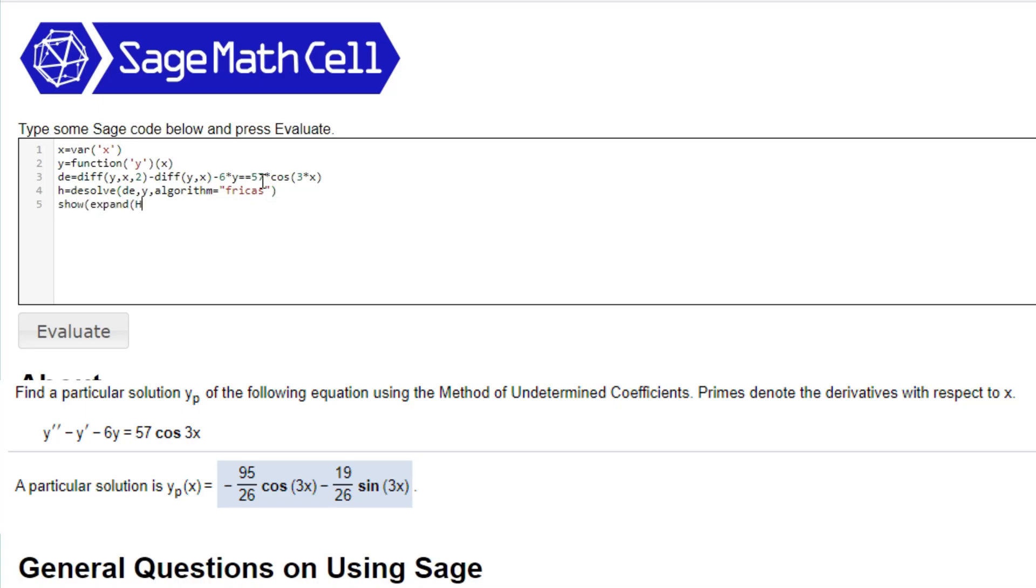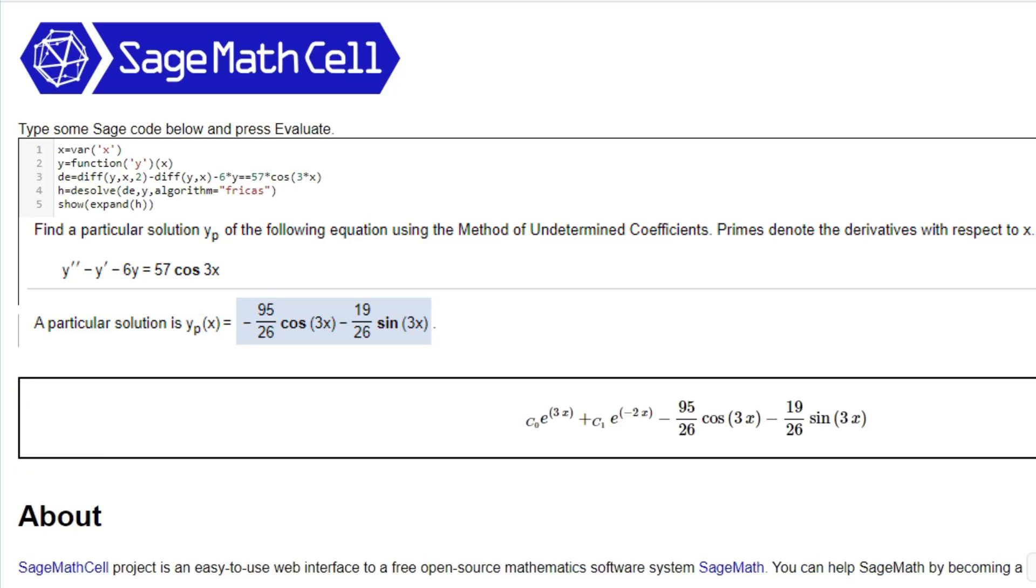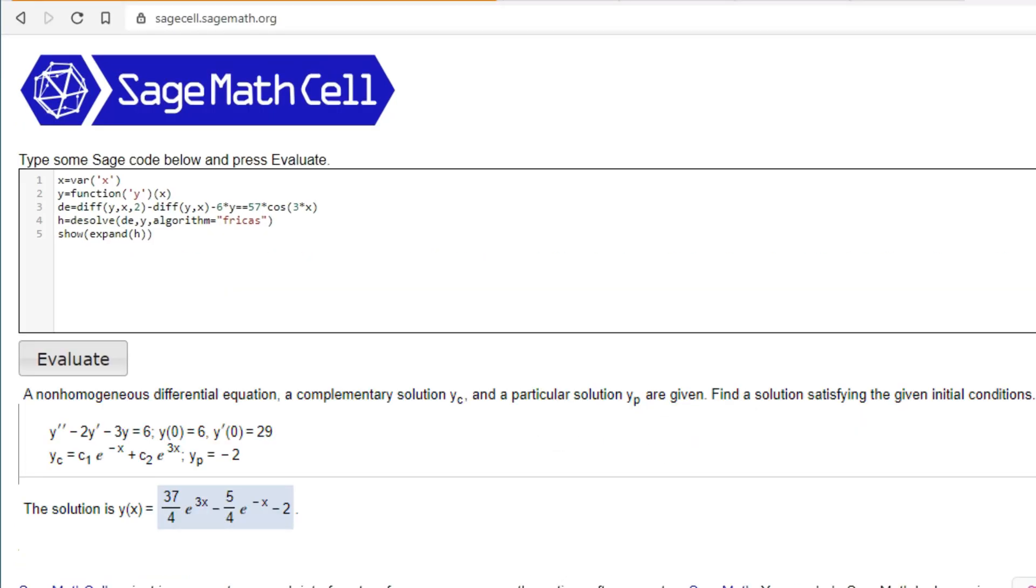And show expand h. And then evaluate. And you get your answer. Sometimes it's a little weird and you get these. But as you can see for the particular solution answer, you can just ignore these two. On to the next one.